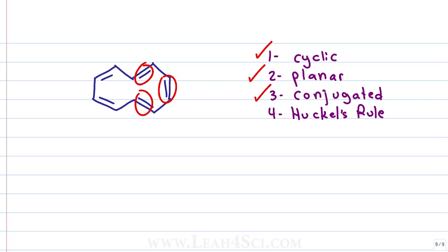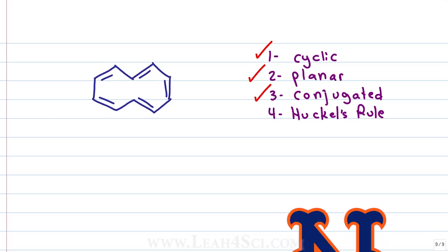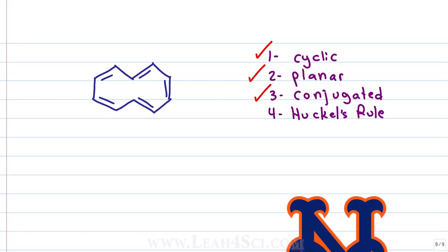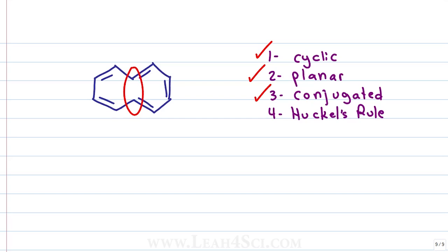And if we use the trick for Huckel's rule, we have one, two, three, four, five pi bonds which is an odd number. That means it's team Huckel's rule or team aromaticity. It appears to be aromatic except for one tiny, tiny little detail. And that is what's going on right here.